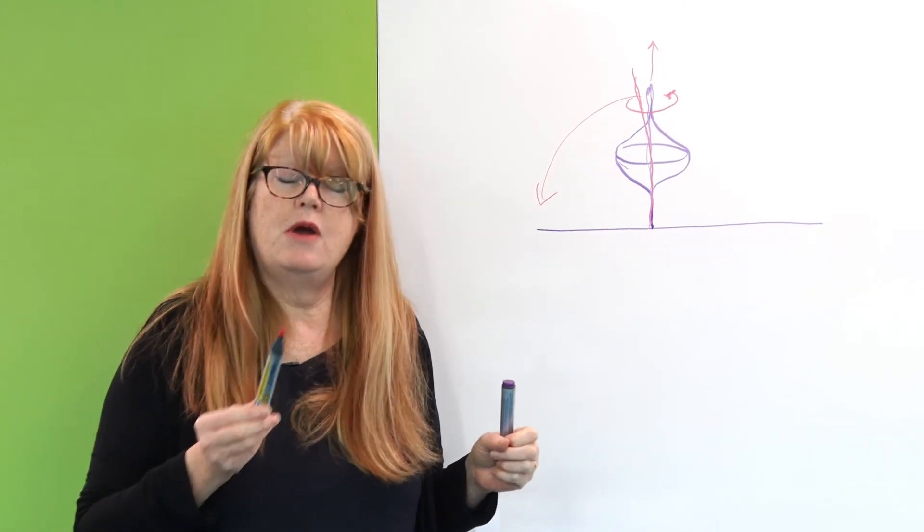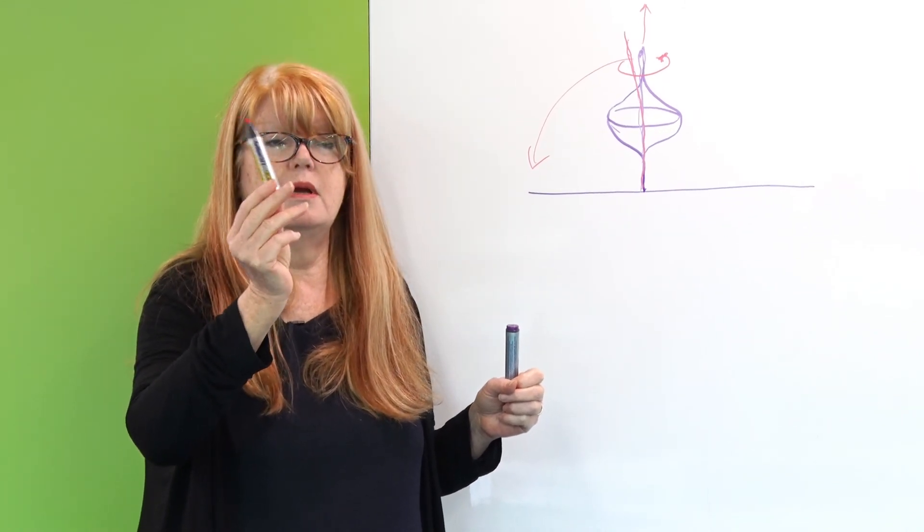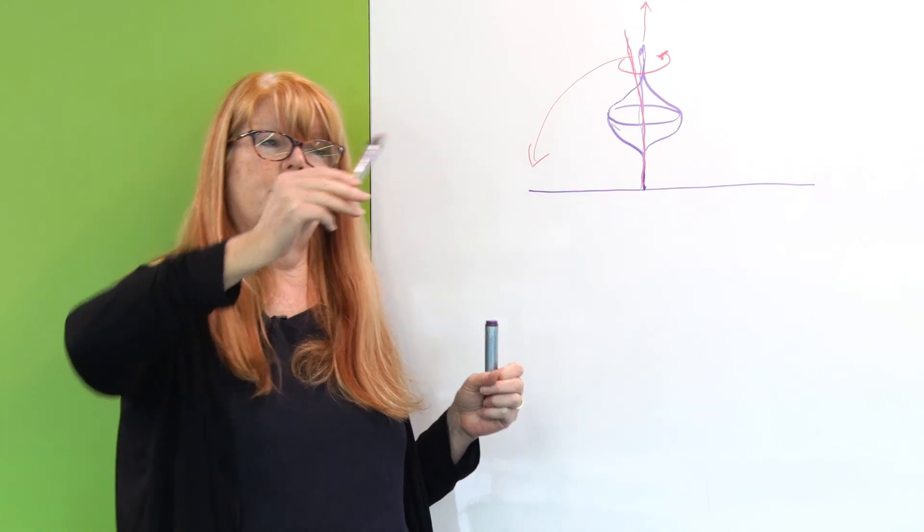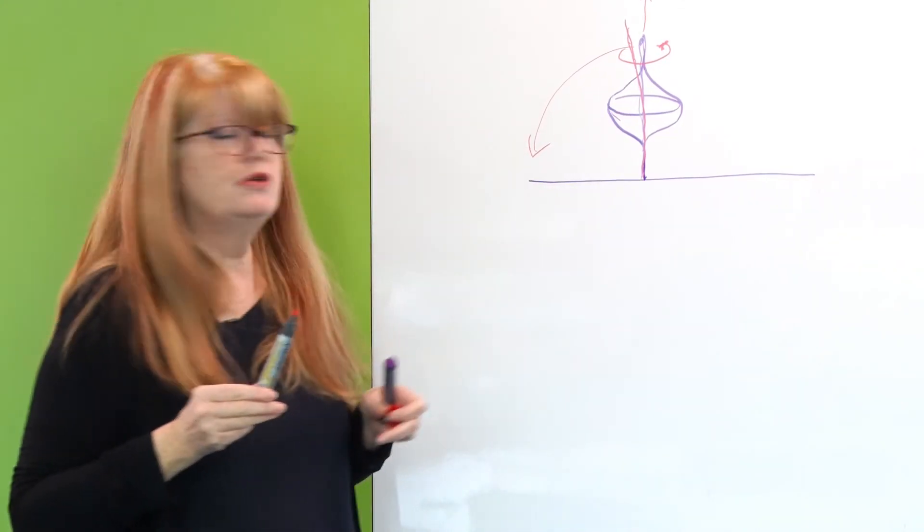And also, we notice that the spinning wheel precesses around, well, around the vertical, just like our top does.